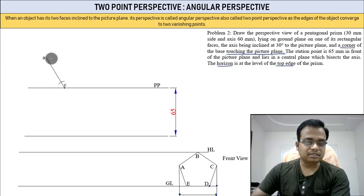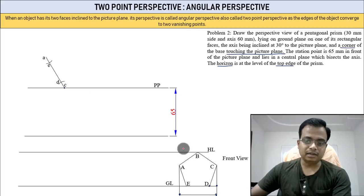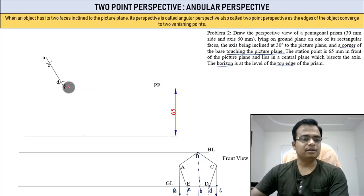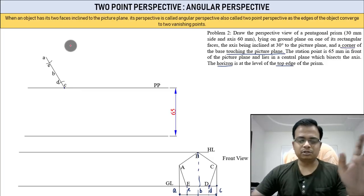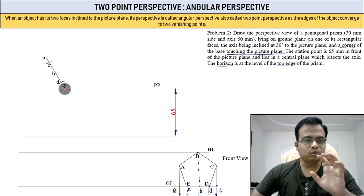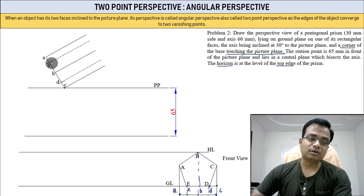Similarly, use C as center with the appropriate radius to cut arcs and get points E and D. Locate point B as well. So you have points A, E, D, C, and B for the pentagon. Then draw perpendicular lines through all these points — 60 millimeters long.